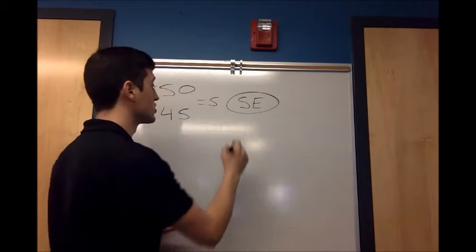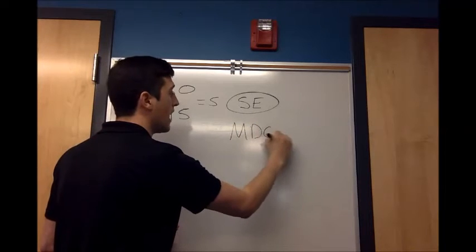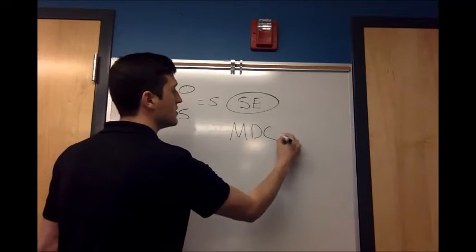So that's our standard error measurement for the DASH. So that means that our Minimal Detectable Change, which is the first number outside of the standard error, has to be six points.